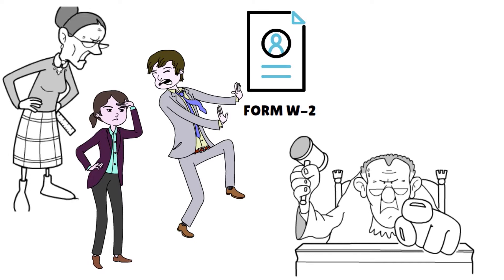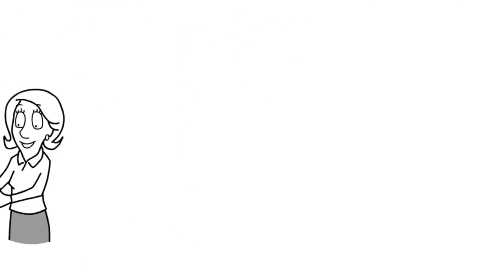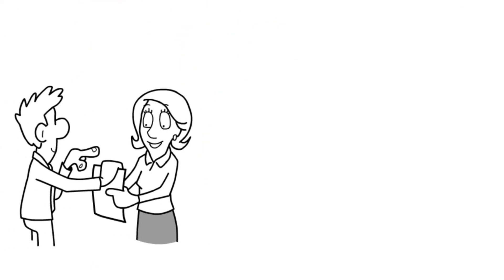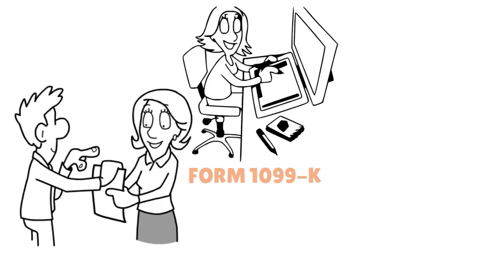Do not file 1099s for contractors hired through Fiverr or other marketplaces, because those platforms are technically payment settlement entities — businesses do not need to provide 1099-NEC forms to workers hired on those platforms. If you are a freelancer who finds work on such a platform, you will get a Form 1099-K if you earn more than $20,000 and have 200 transactions; otherwise you can find all the tax filing info you need in your account.